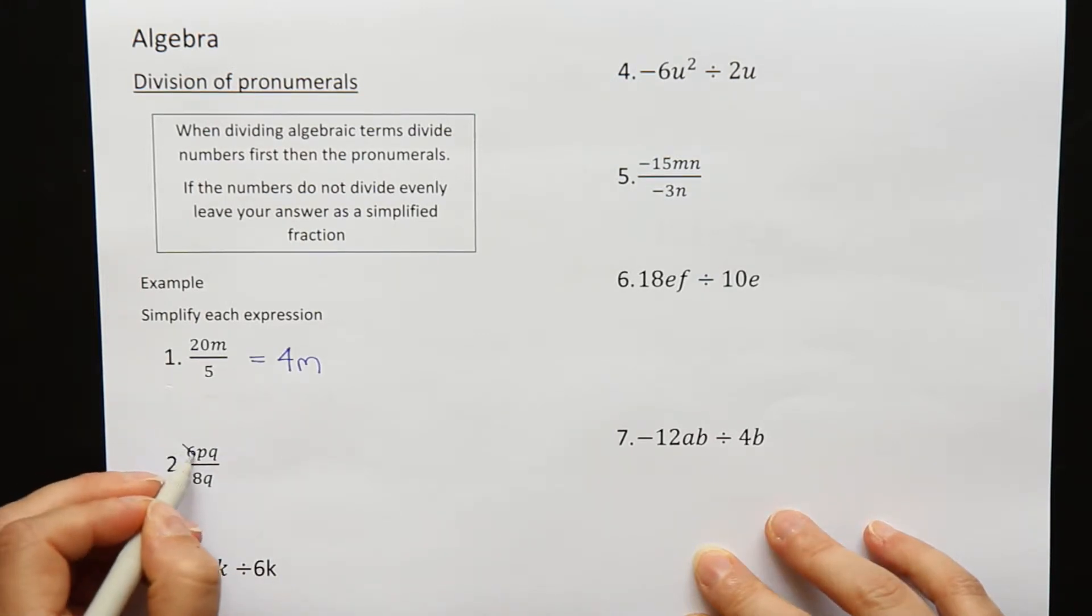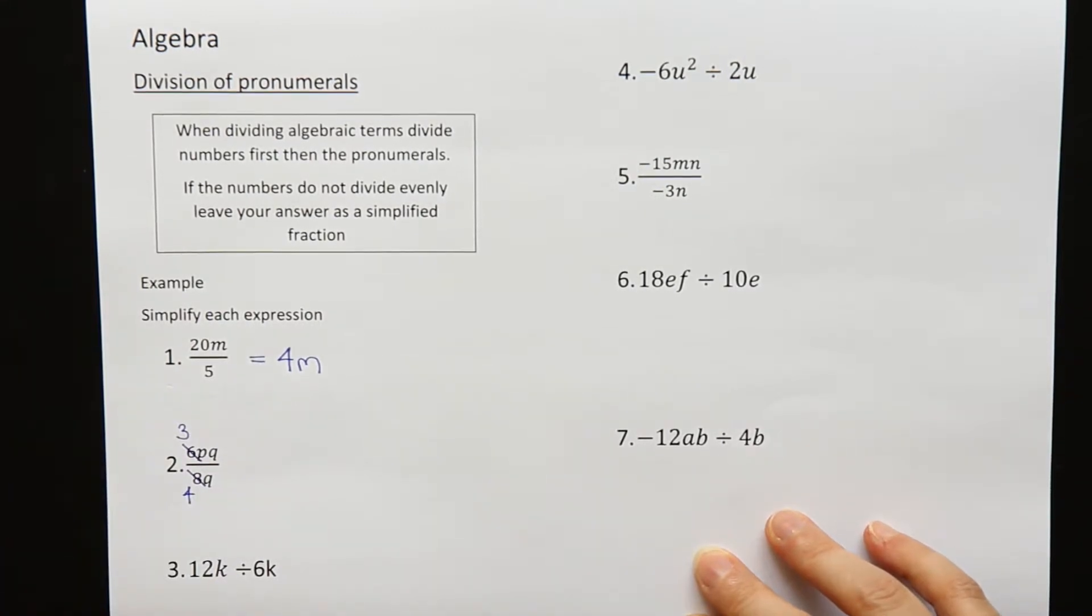Both of those numbers could be divided by 2. So if I divide 6 by 2, I get 3. Divide 8 by 2, I get 4.